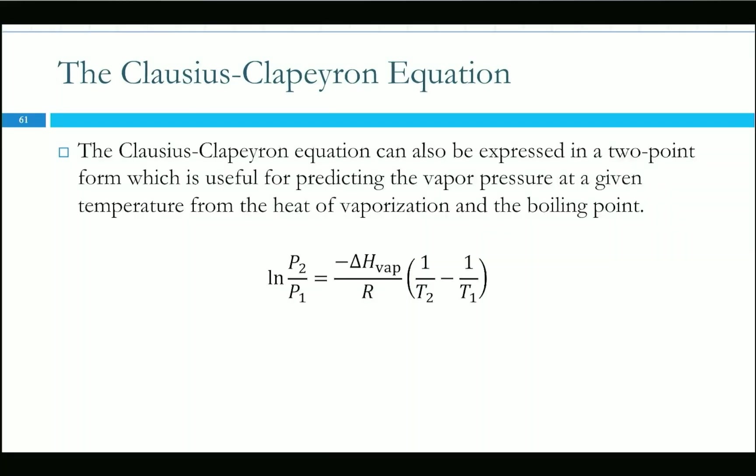There's also the two-point Clausius-Clapeyron equation, which lets you calculate vapor pressure at one condition given another without graphing. Just make sure T₁ and T₂, and P₁ and P₂, are properly paired together.